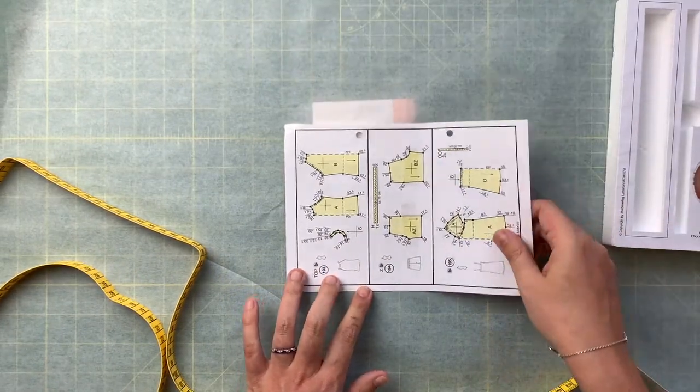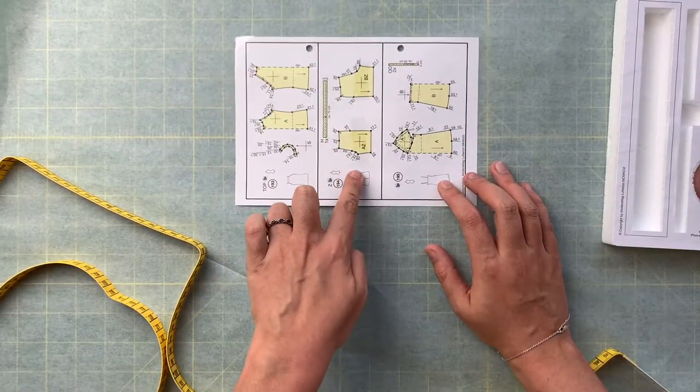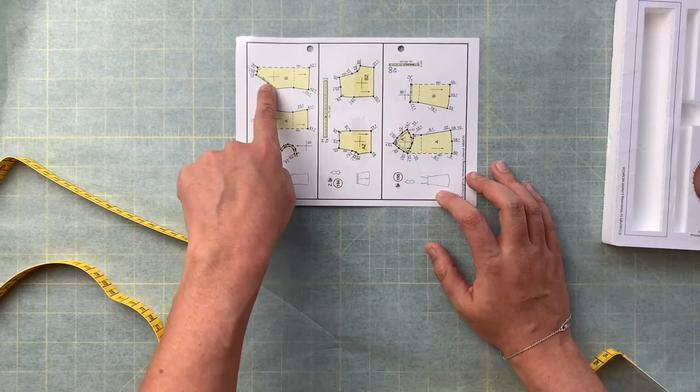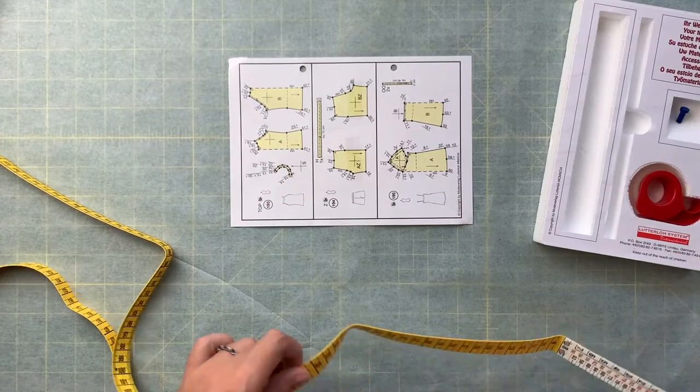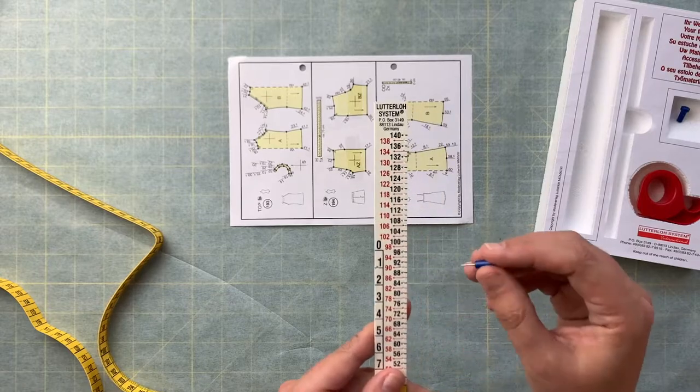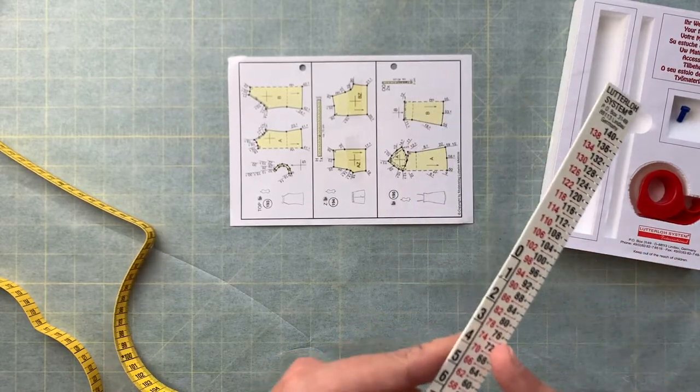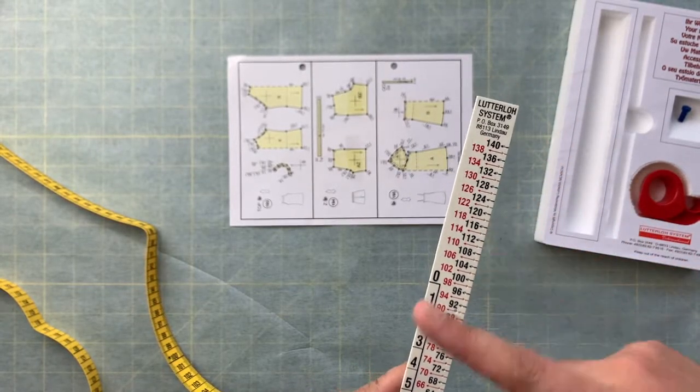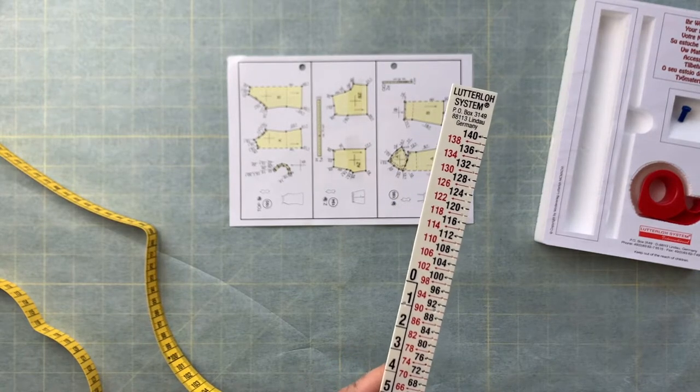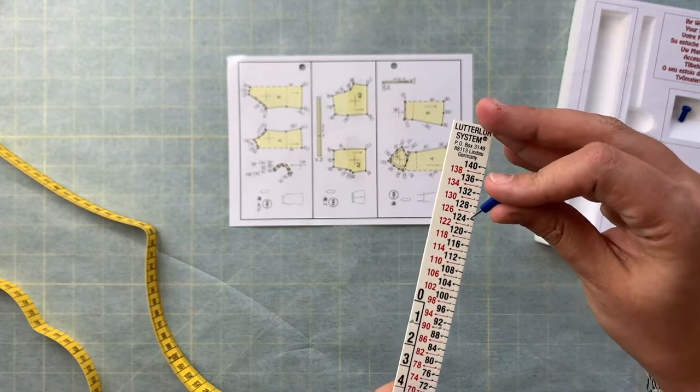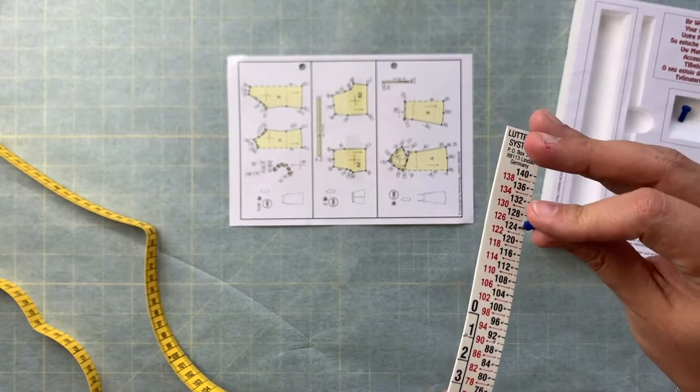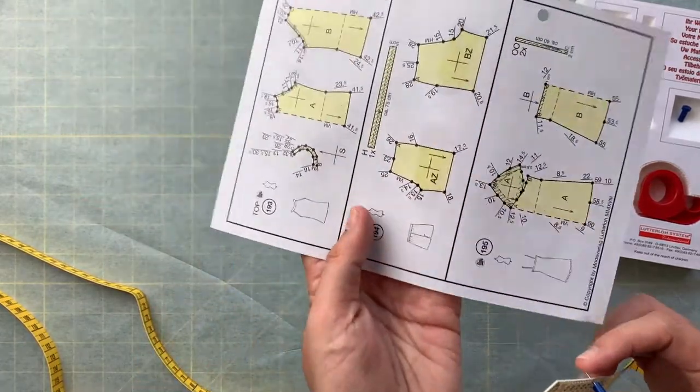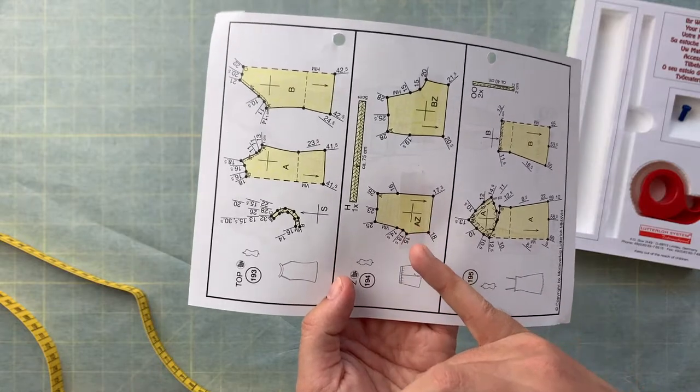The next step is to identify your pattern, which we've done here, and then identify the little plus symbol that is in the middle of each pattern piece. Then you want to take your little pin and your pin is going to go into one of these holes. Can you see the holes that are on the edge? These numbers correspond to the hip measurement that I just took. So I'm 124, so I'm going to put it in the 124 slot.